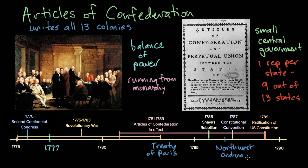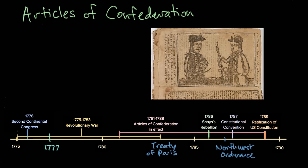The only problem is with the Articles of Confederation there is a lot of things that we still have to figure out as we're growing — a lot of growing pains. The inciting incident is Shays' Rebellion. It happens in Massachusetts and it's a group of farmers led by this guy named Daniel Shays.